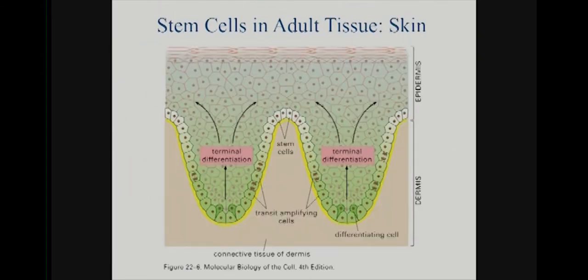Let's go through some examples of adult stem cells — where are they and why are they there? One thing to think about: these may in many cases be sources of cancers, since they're proliferating cells that may have long lifetimes and a long opportunity to be exposed to environmental mutagens. In the skin, you have the dermis and the epidermis. A little deeper in the dermis you have this convoluted structure where stem cells tend to reside.